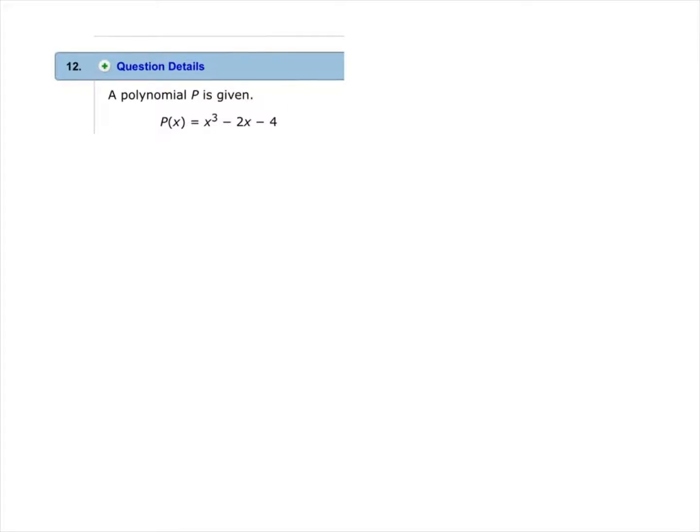A polynomial p is given. We will factor this polynomial by finding the roots. So we will begin by setting the polynomial equal to 0.